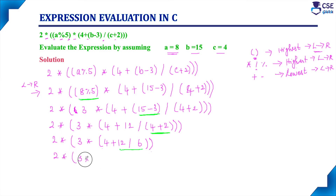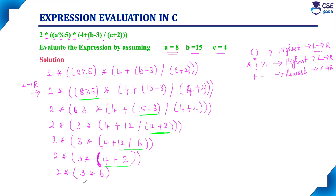12 divided by 6 gives 2, so the expression becomes 2 * 3 * 4 + 2. This is the main difference between the modulus operator and the division operator. Next, evaluating left to right: 2 * 3 = 6, then 6 * 4 = 24, then 24 + 2 = 26... resolving to 2 * 18 = 36. So the final answer is 36.